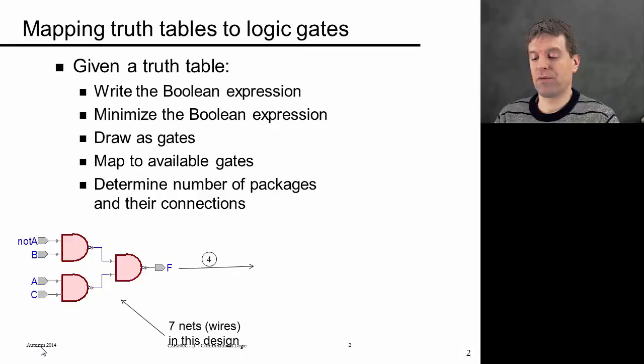So here's the workflow that you're going to realize in the lab. You're going to start with a truth table or some very high level description of the function that you want. Obviously the first thing you're going to do is write the corresponding Boolean expression. You're going to minimize the Boolean expression and maybe you're going to draw your circuit out in terms of logic gates.